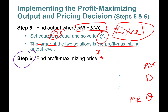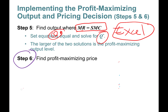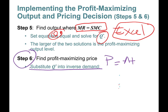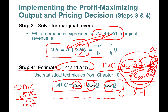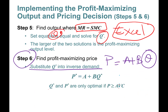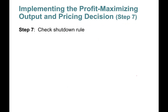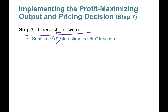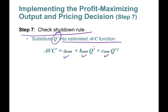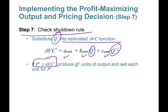Step four: find the profit-maximizing price. Substitute Q* into the inverse demand function P = A + B·Q* to get P*. Q* and P* are only optimal if price is greater than or equal to average variable cost — this is the shutdown condition. Substitute Q* into the average variable cost function. If price is greater than or equal to AVC, produce Q* units of output and sell at price P*.